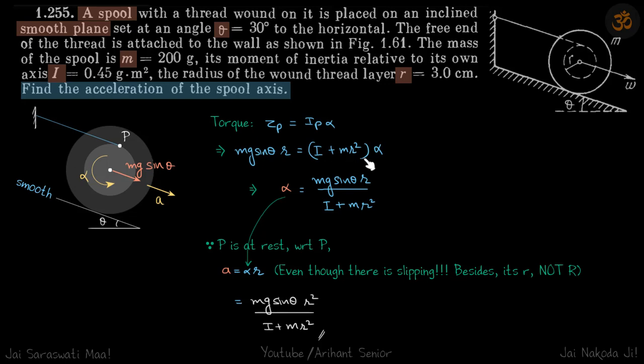This equals I plus mr² times α, which gives the value of α. Now we need the acceleration. Since this point is at rest, with respect to that, if you know the α, acceleration of the center will be α times this radius r. So a equals αr. We put the value of α and get our answer.